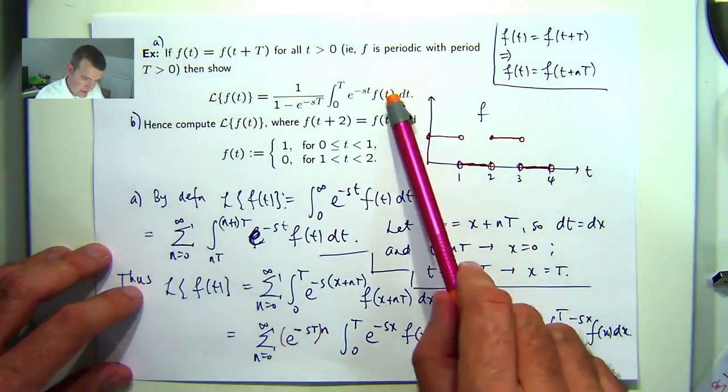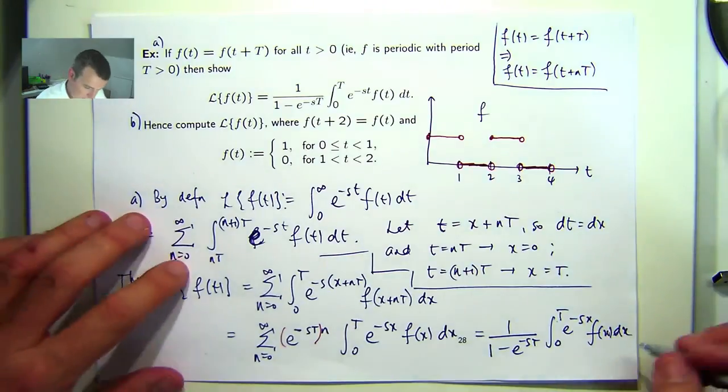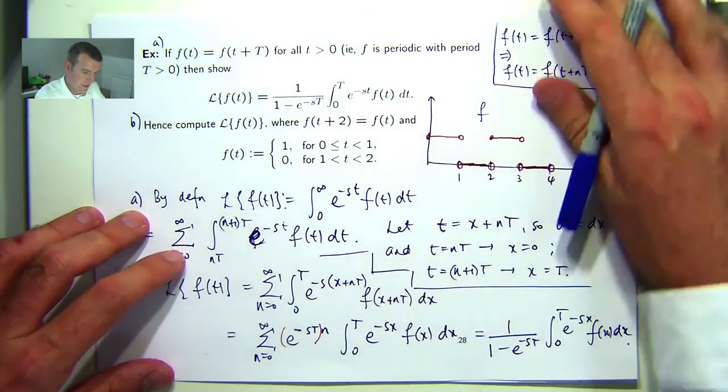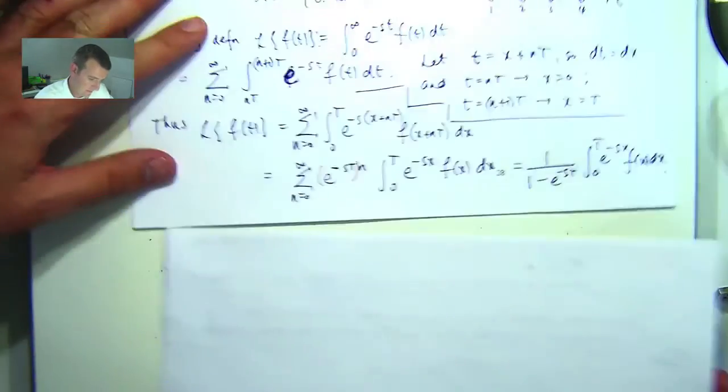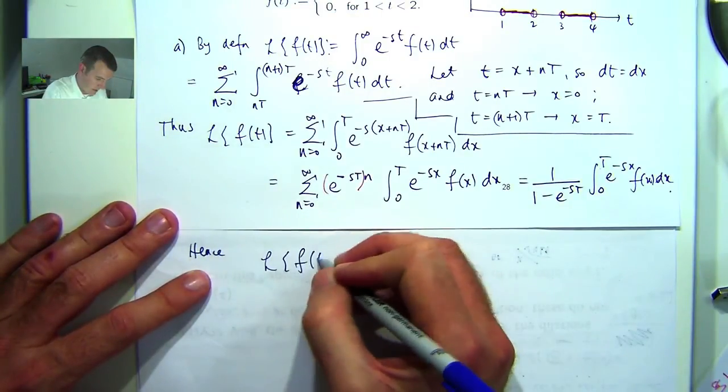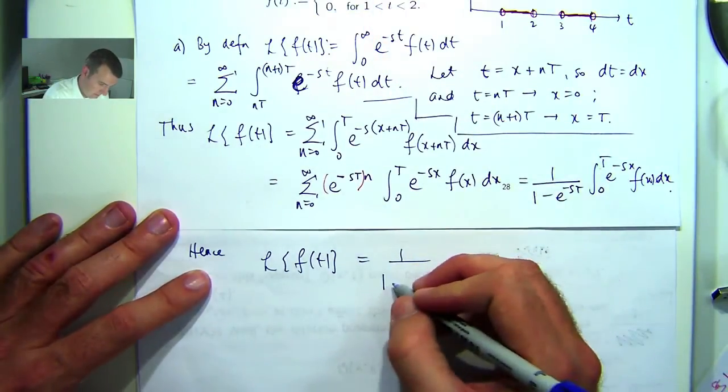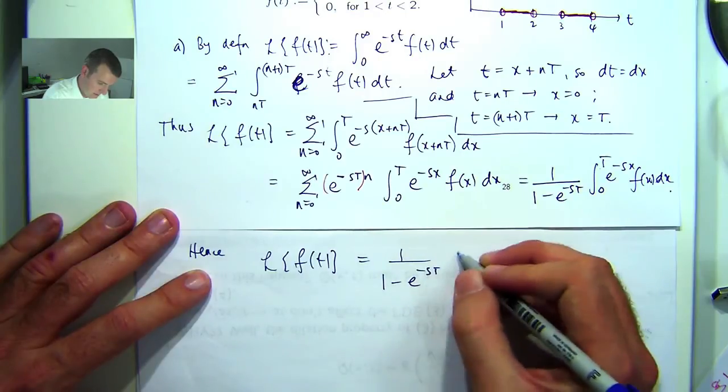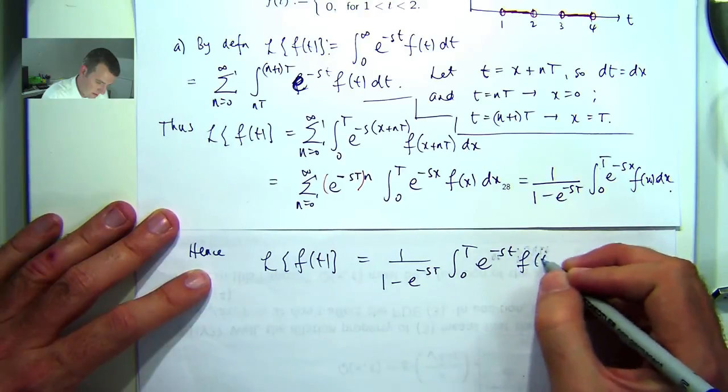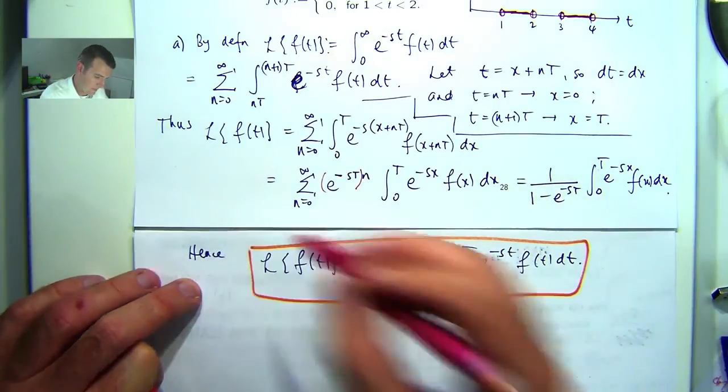So do we have what's up here? Well, if you compare this, I've got t's here and x's here, but you can change back. Because x is the dummy variable here, t is the dummy variable here, so we can change back easily. So let's just change back so it's what we have up here. And we're done.